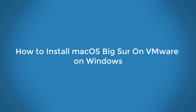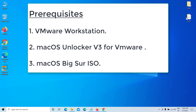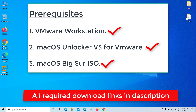How to install macOS Big Sur and VMware on Windows. Prerequisites: VMware Workstation Pro, macOS Unlocker v3 for VMware Workstation, and macOS Big Sur ISO. All required download links are in the video description.